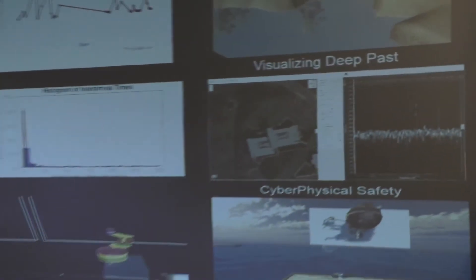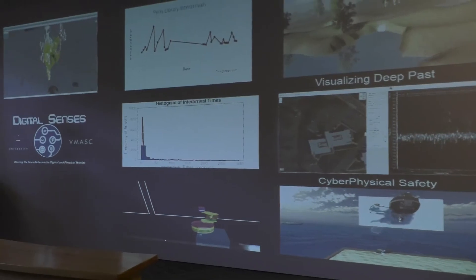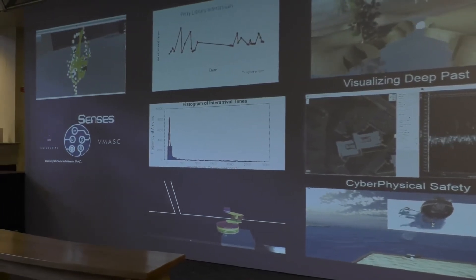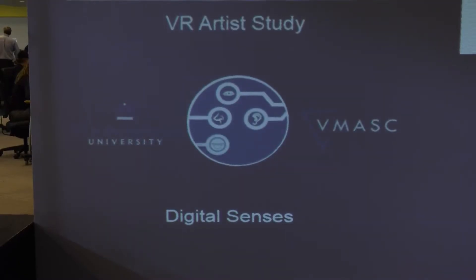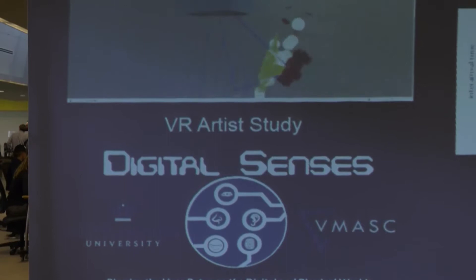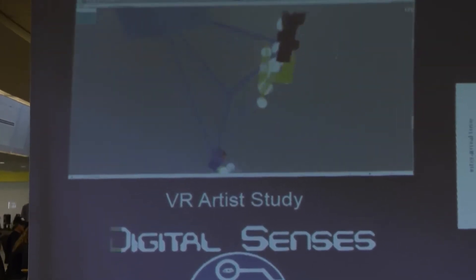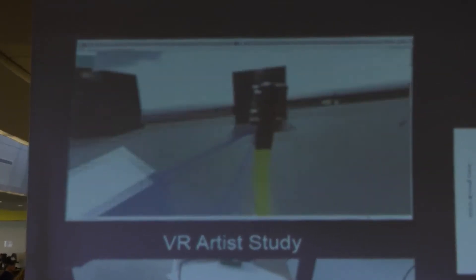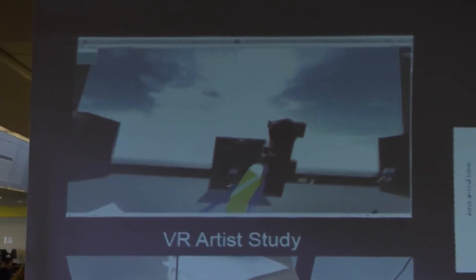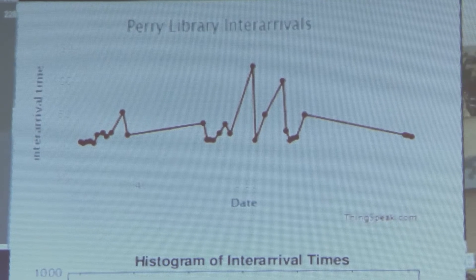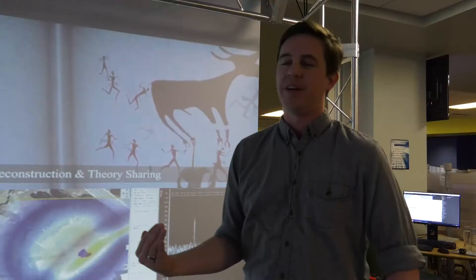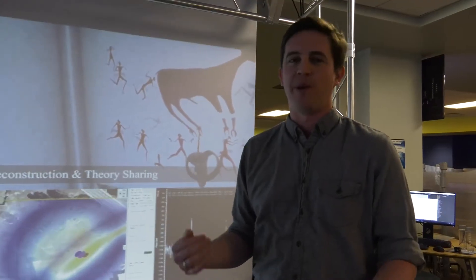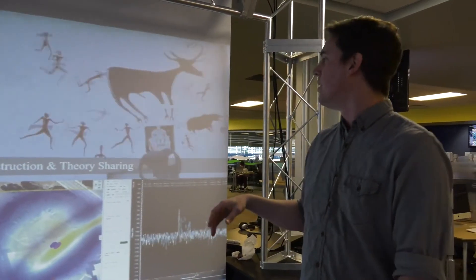On this wall, we have some work from researchers at VMASC — we wanted to showcase some of what they've been working on. There's some work with virtual reality and artists where we capture their movement. We also have some work happening right now in real time: we're capturing inter-arrivals as people come into the library, so we could do some crowd modeling of that later on.